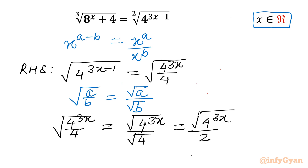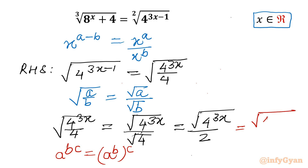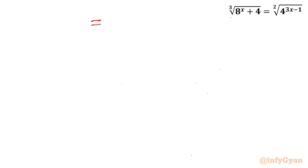Now I will write another very powerful exponent law: a^(b×c) can be written as (a^b)^c. So here I can write it as (√(4^3))^x divided by 2, which becomes (4^3)^x divided by 2.